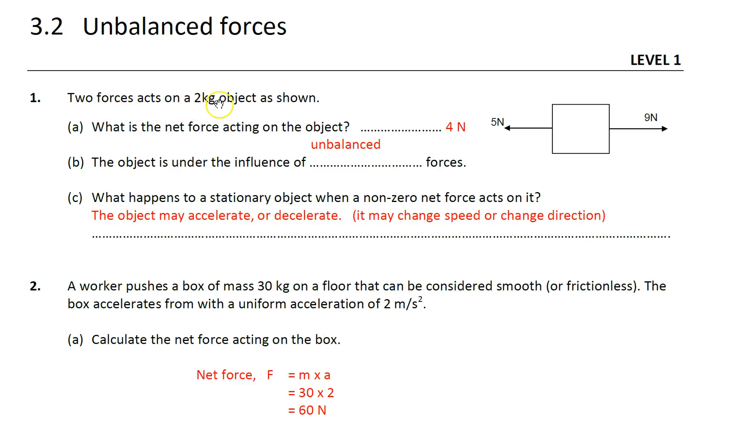Two forces acts on the 2 kilogram object as shown. What is the net force acting on the object? So in this case, 9 newton is pushing to the right, 5 newton is pulling it to the left, so there is an unbalanced force of 4 newton to the right.